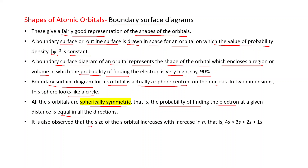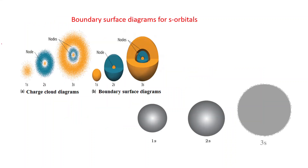The size of the s orbital increases with increasing n — 1s is the smallest, 2s is larger than 1s, 3s is larger than 2s, and 4s is larger than 3s. The charge cloud diagrams for 1s, 2s, and 3s show that more dot density means higher probability. The boundary surface diagrams for these orbitals appear as circles of increasing size on a plane.